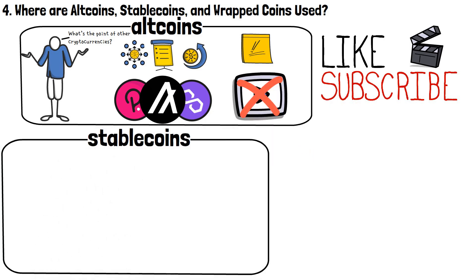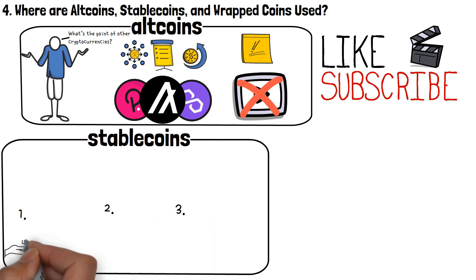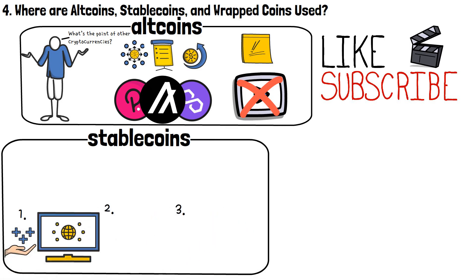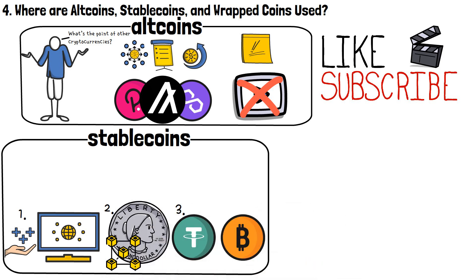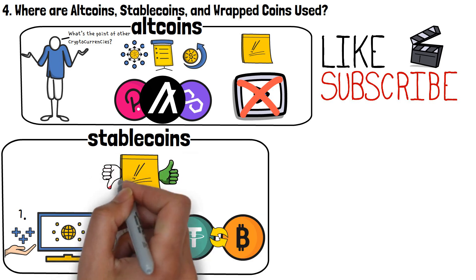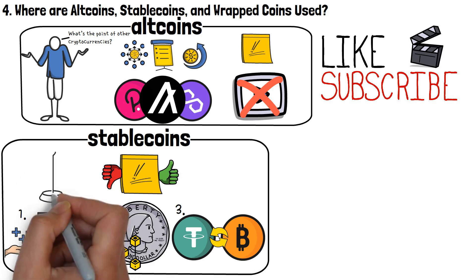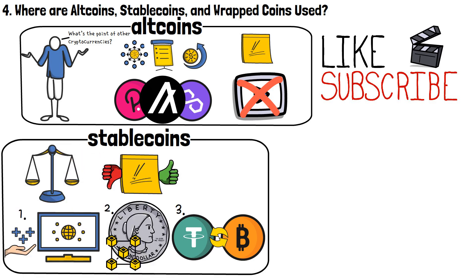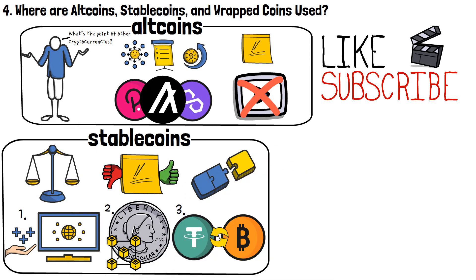Stablecoins are a bit more tricky. They're mostly used for three different purposes — providing liquidity to cryptocurrency projects, representing traditional assets on the blockchain, and being used as a tool to acquire other cryptocurrencies quickly. All three of these use cases are super important and come with different pros and cons. Suffice to say that stablecoins help keep the cryptocurrency industry stable and liquid, and allow traders to invest in the market in a much simpler and more straightforward manner.